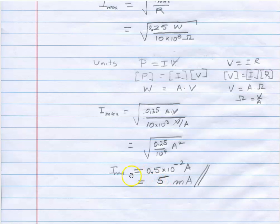And the square root of ampere squared is just amperes. So this becomes 5. The maximum current you should drive through this particular resistor is 5 milliamps.